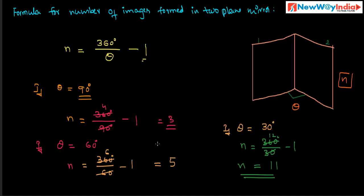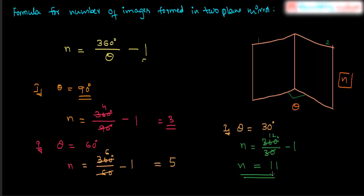So in this way, we can find the number of images formed in two plane mirrors. If theta is 90°, three images are formed. If theta is 60°, five images are formed. If theta is 30°, 11 images are formed. By changing or reducing the angle between the two plane mirrors, you can control the number of images formed.